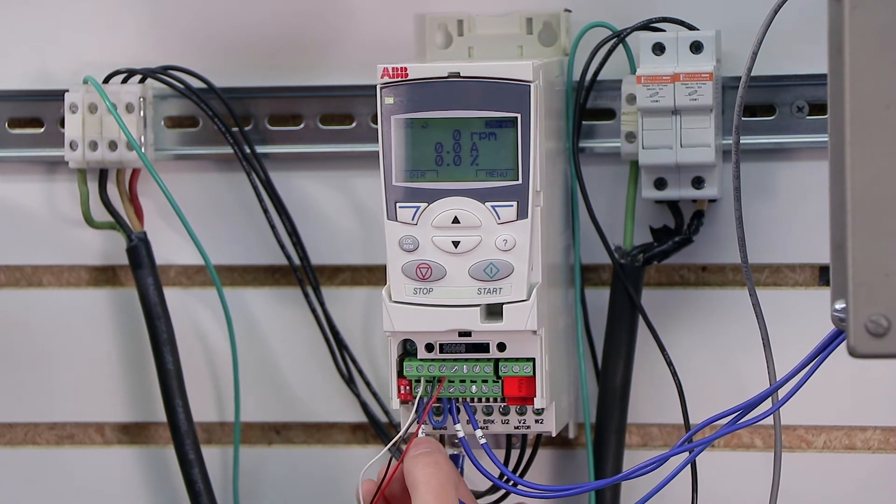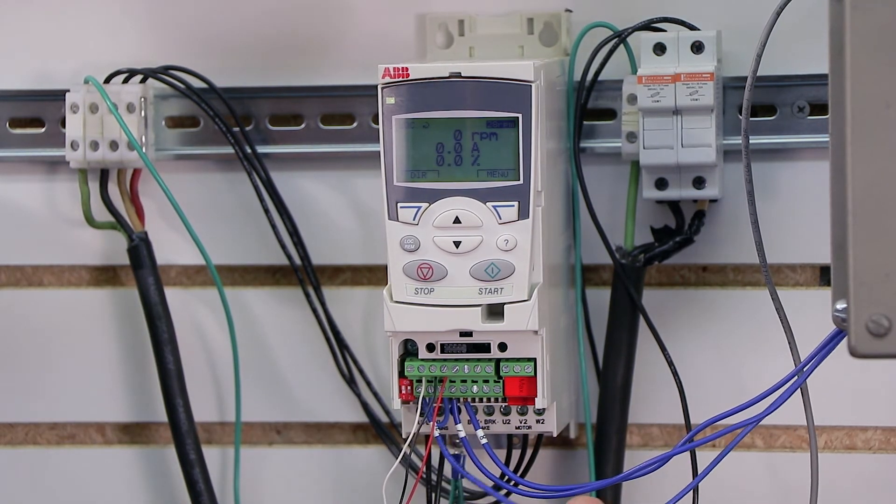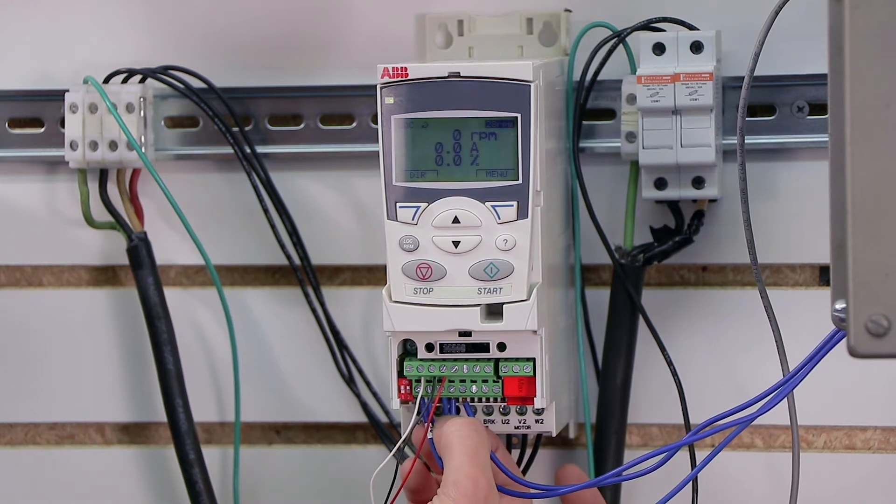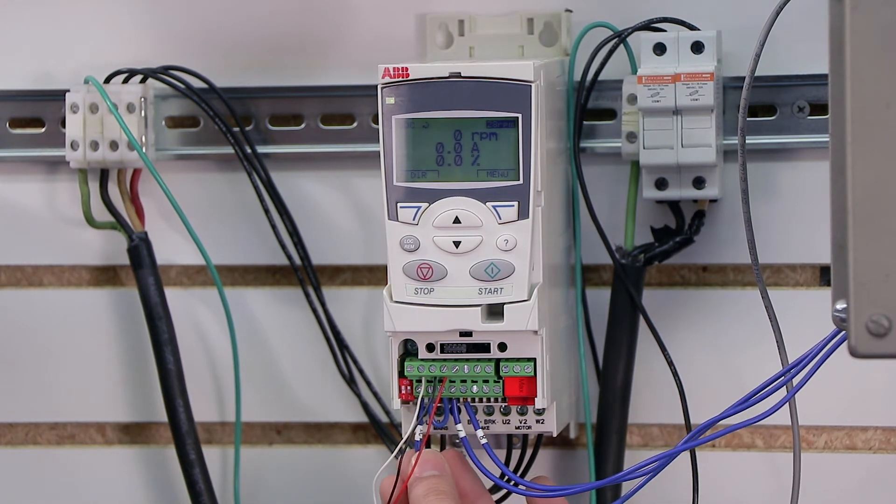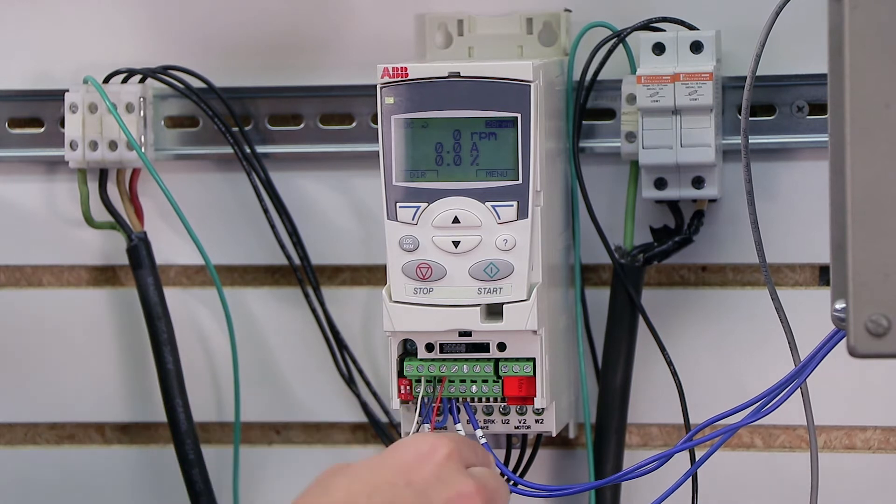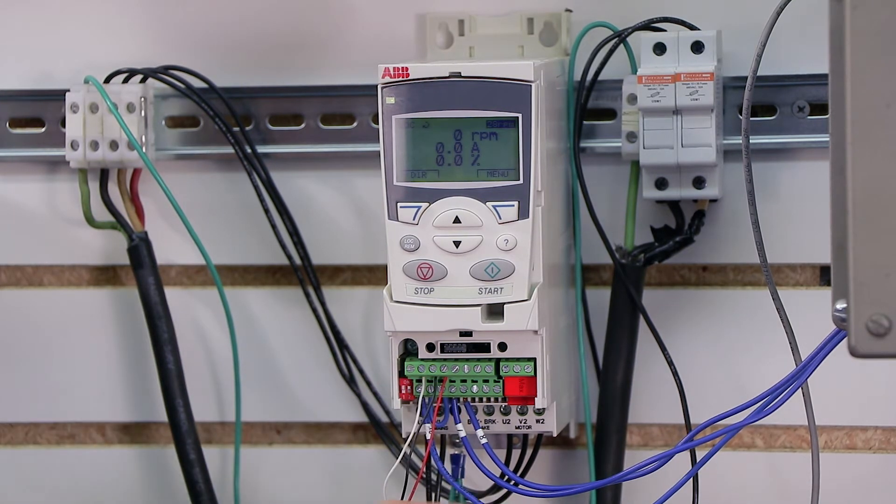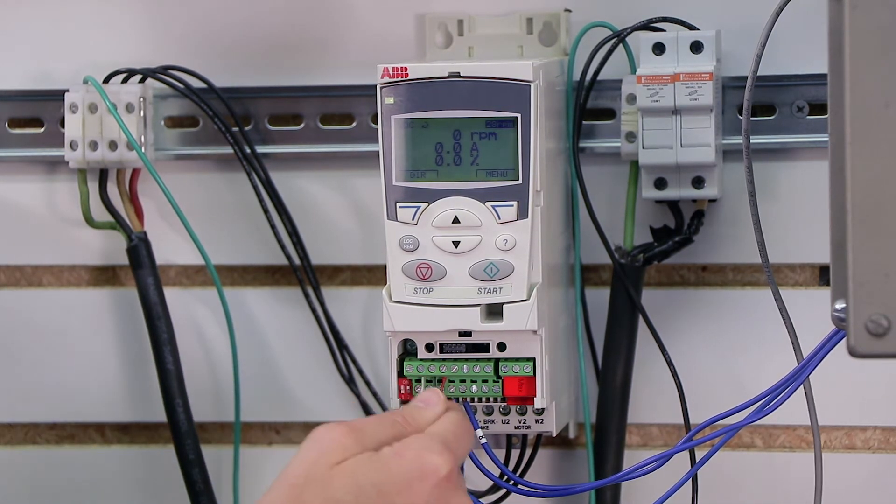The other side of our start button is coming out into terminal 12. So essentially electricity is going to flow from terminal 9 into terminal 12 when we press that button, because the button is a normally open push button. So as soon as we press the button in, electricity will flow from 9 to 12, and the start command will be issued.